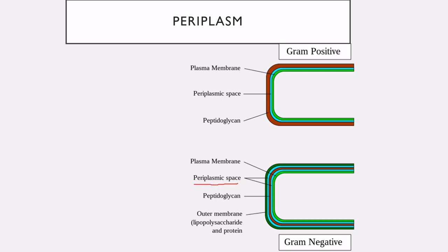The periplasm is the space between the outer membrane and the inner membrane of gram negative bacteria. While by strict definition it is only present in gram negative bacteria, some consider a very small periplasmic region in gram positive bacteria as well. In gram negative bacteria, the periplasm contains beta-lactamase, which inhibits the action of penicillin by preventing it from binding to penicillin-binding proteins, thereby protecting the bacteria against this antibiotic.